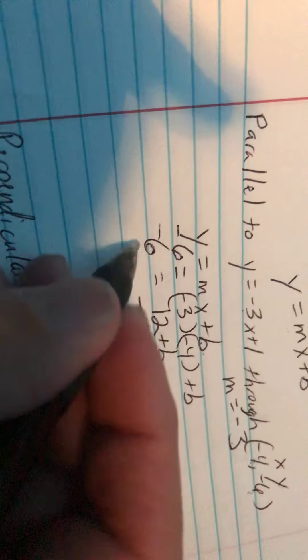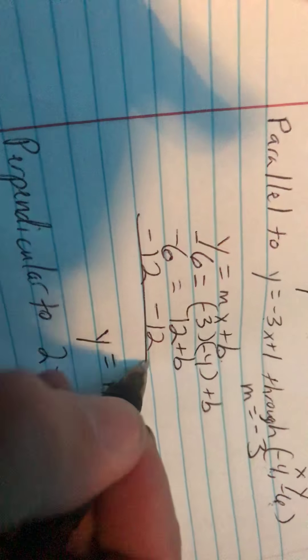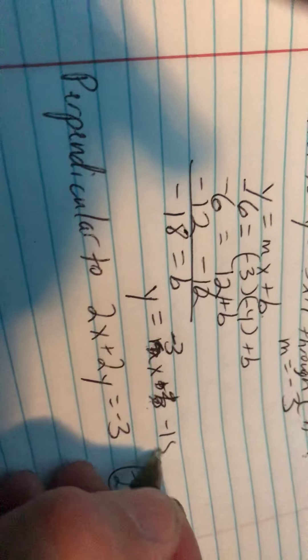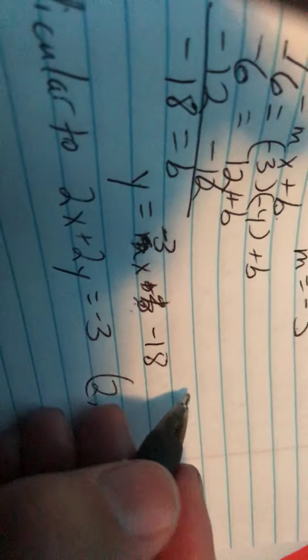We'll subtract 12, subtract 12. That cancels, so b is negative 18. So that will be minus 18. And I'll just rewrite it to make it look better: y equals negative 3x minus 18.